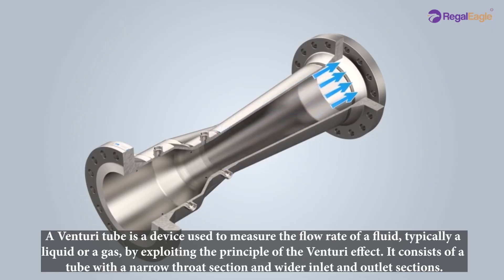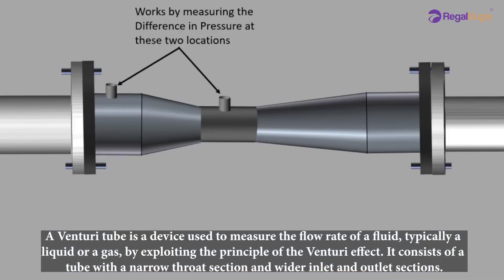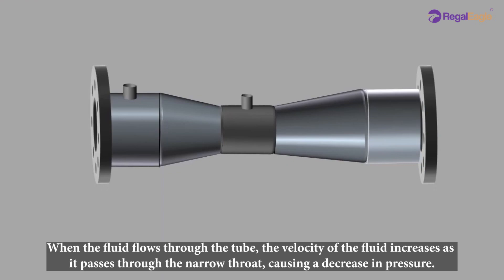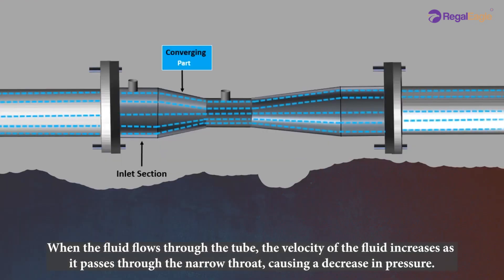A venturi tube is a device used to measure the flow rate of a fluid, typically a liquid or a gas, by exploiting the principles of the venturi effect. It consists of a tube with a narrow throat section and wider inlet and outlet sections. When the fluid flows through the tube, the velocity increases as it passes through the narrow throat, causing a decrease in pressure.